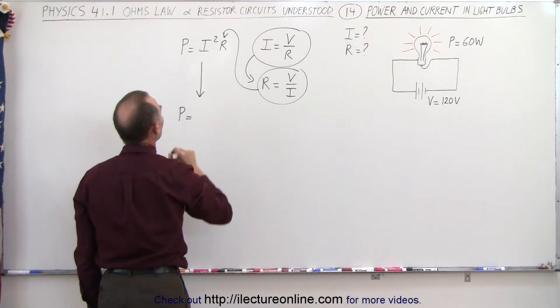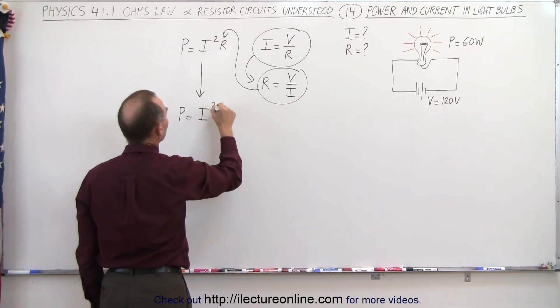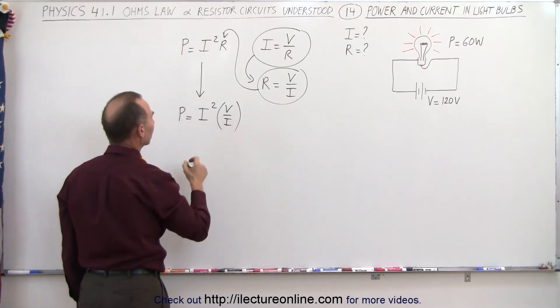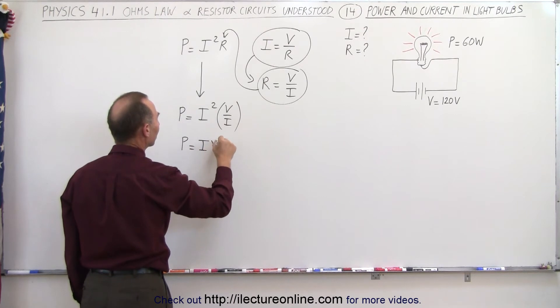We get the power is equal to I squared times R which can be written as V divided by I, and then we see that one of the I's cancel out and the power is then equal to the product of I times V.